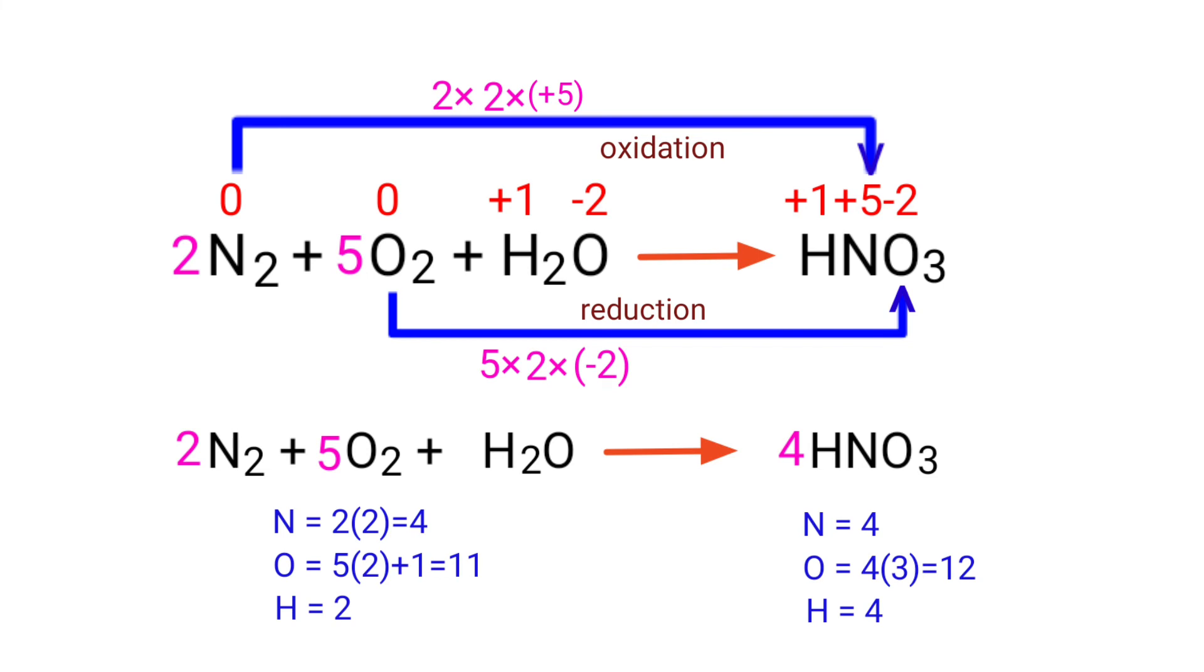The nitrogen atoms are balanced. Now we need to balance the oxygen and hydrogen atoms. To do this we need to put a coefficient of 2 in front of H2O. The equation is now balanced. There are 4 nitrogen atoms, 12 oxygen atoms, and 4 hydrogen atoms on both sides.